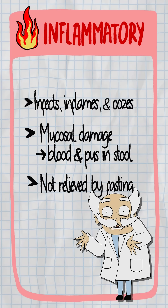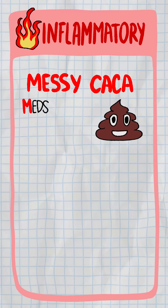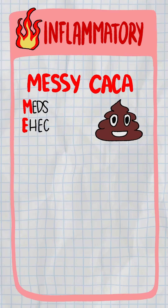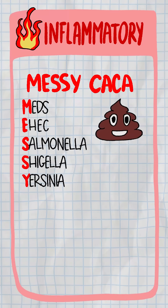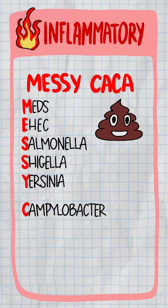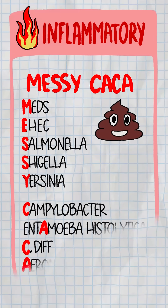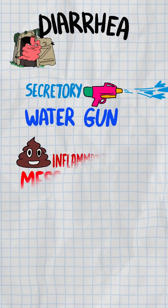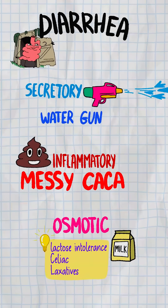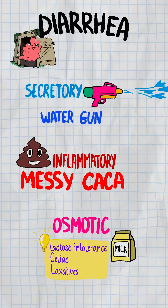Inflammatory diarrhea infects, inflames, and oozes. It wrecks the mucosa, causes blood and pus in the stool, and doesn't care if you fast. Mnemonic: MESSY CACA — Meds, EHEC, Salmonella, Shigella, Yersinia, Campylobacter, Entamoeba histolytica, C. diff, Aeromonas.